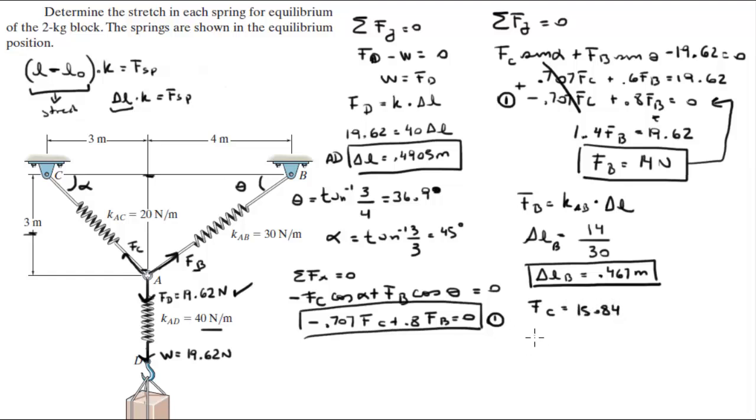F_c is equal to K_AC times the stretch of AC. So 15.84 is equal to 20 N per meter times the stretch. So the stretch of AC comes out to be 0.792 meters.